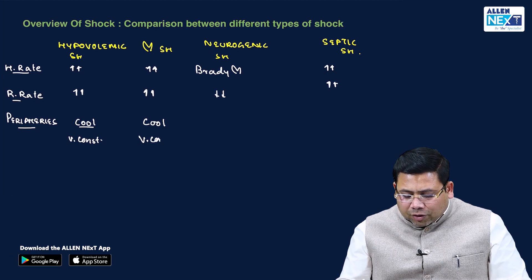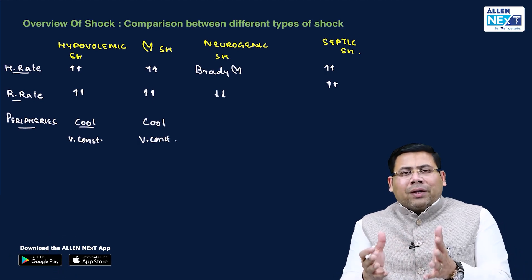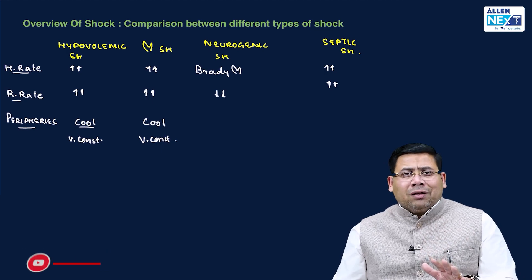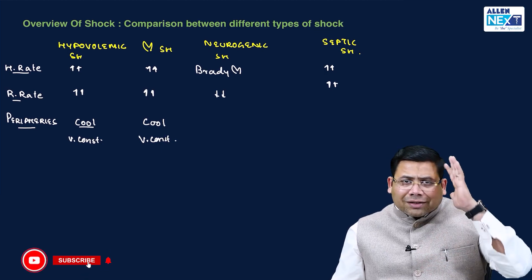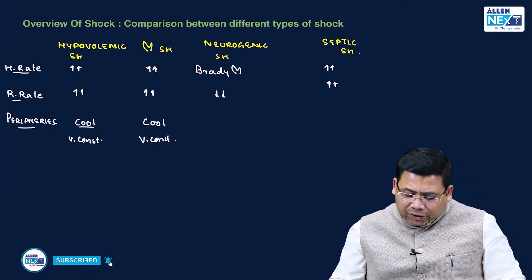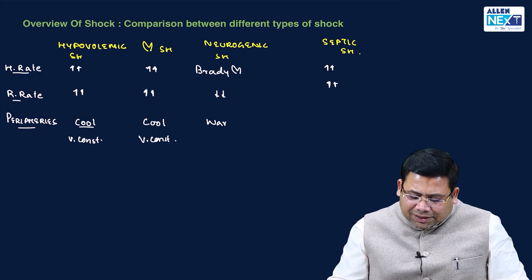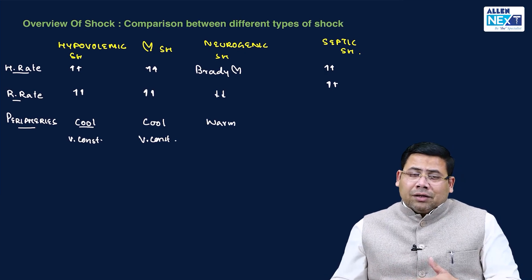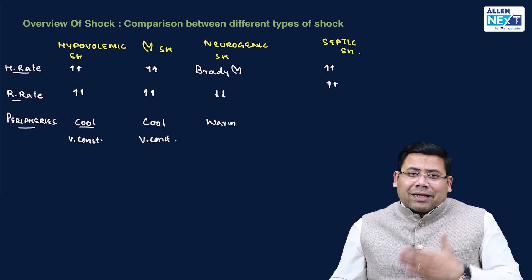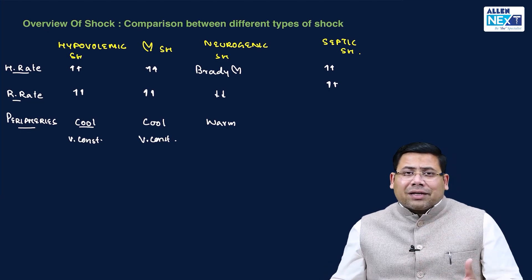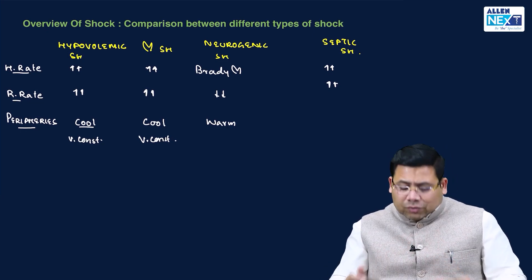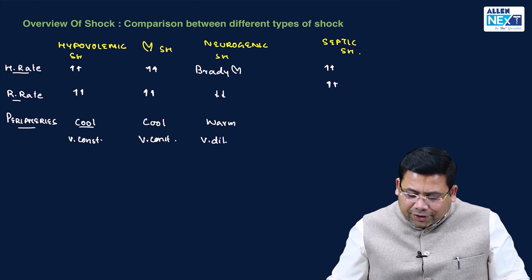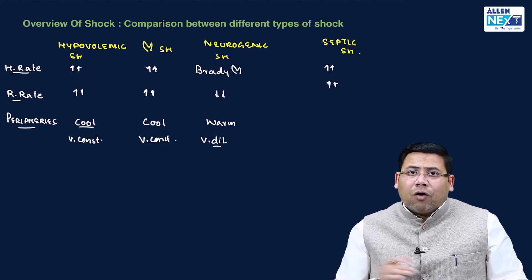What is the contrarian happening in neurogenic shock? In neurogenic shock, there is central loss of sympathetic tone, so the extremities have increased compliance, not resistance — increased capacitance. There is vasodilation, and because of vasodilation, you have warm extremities.